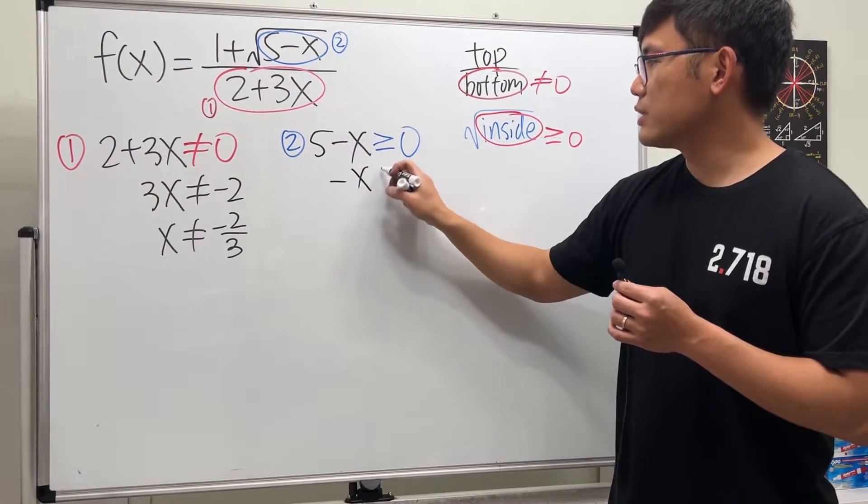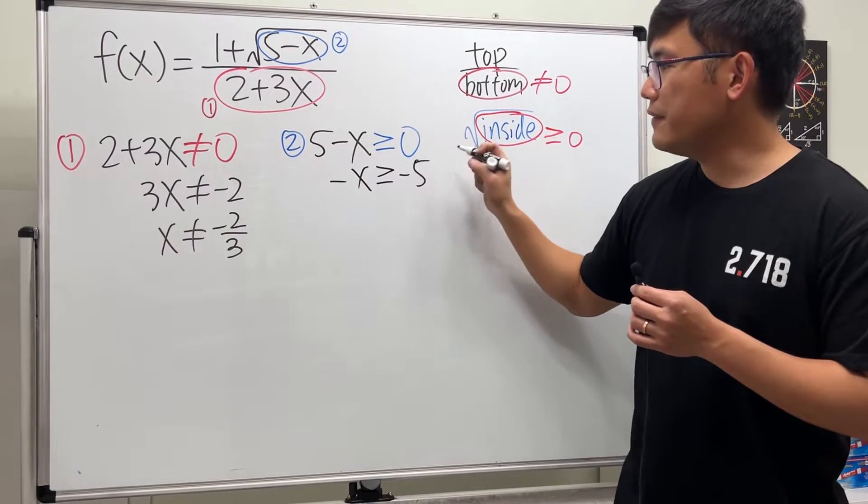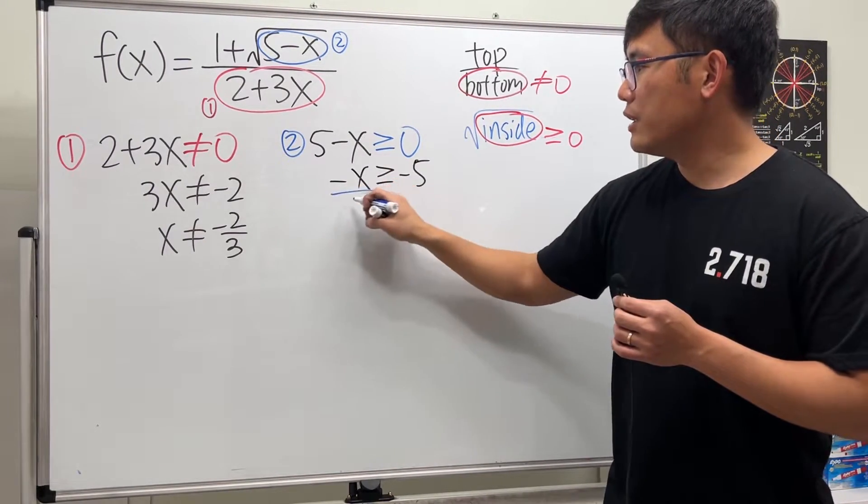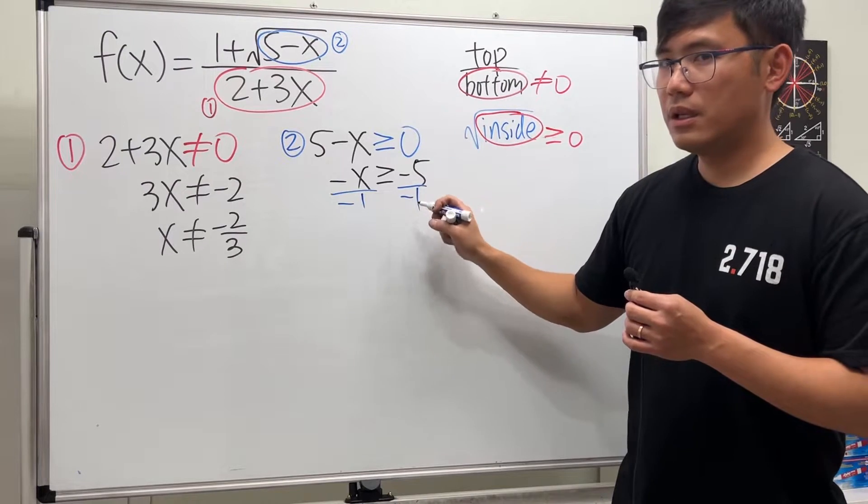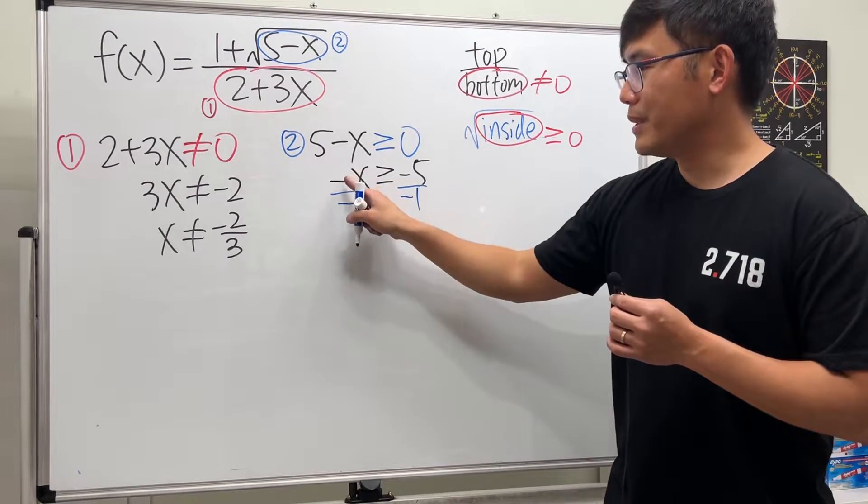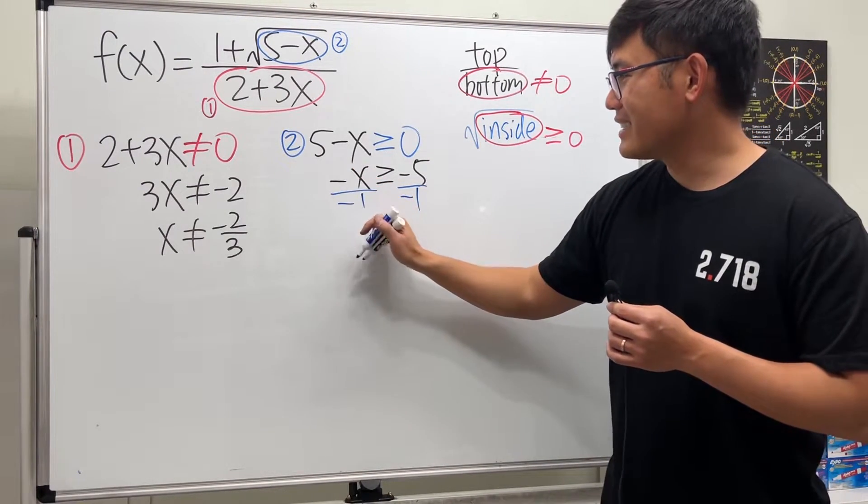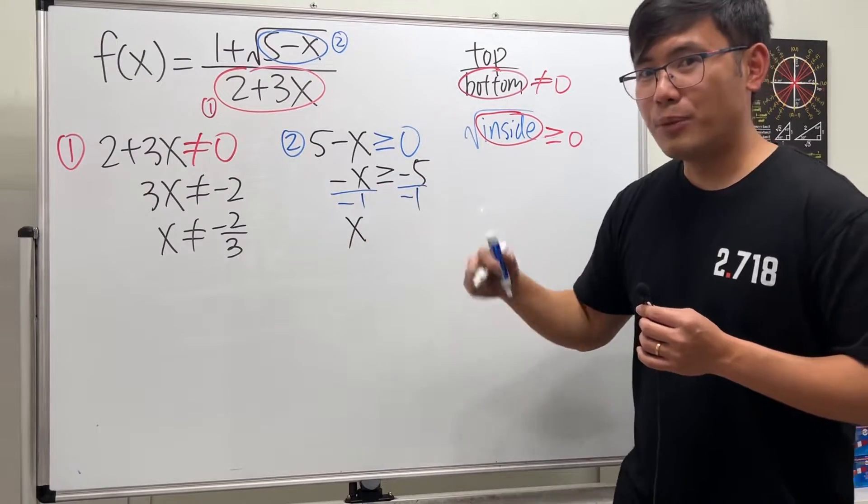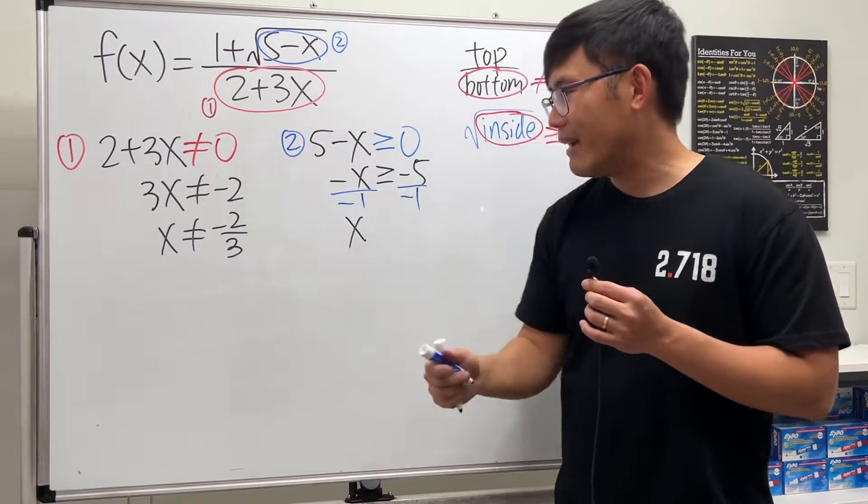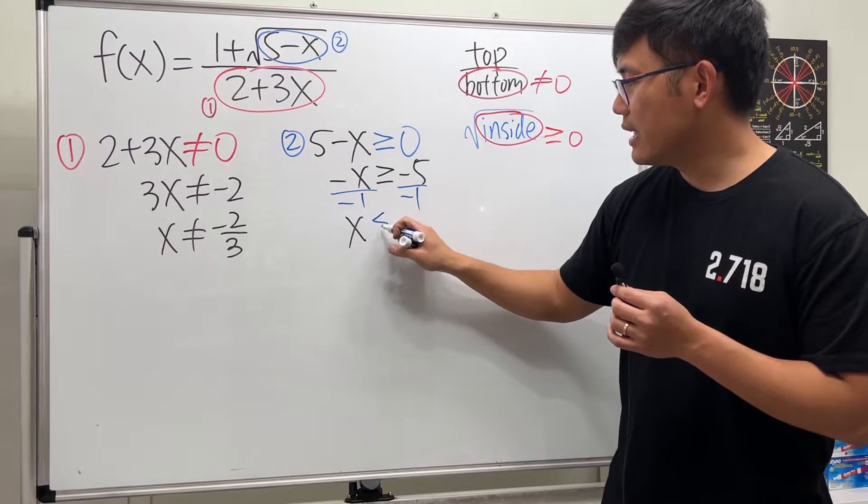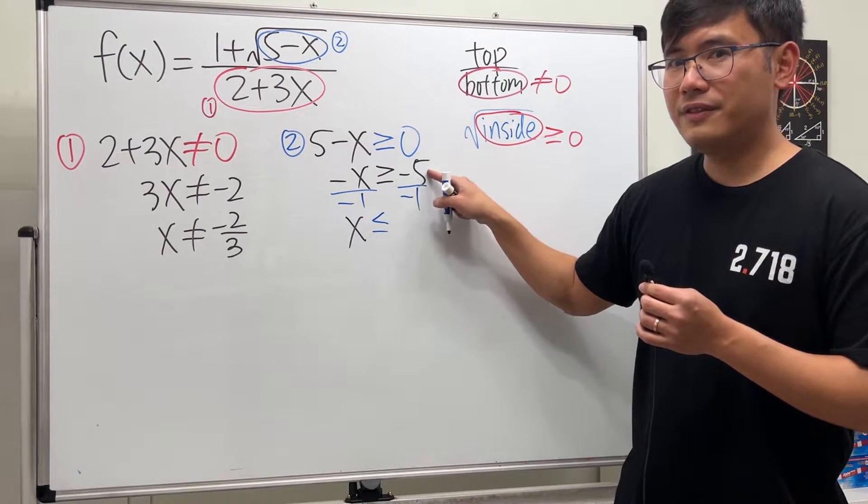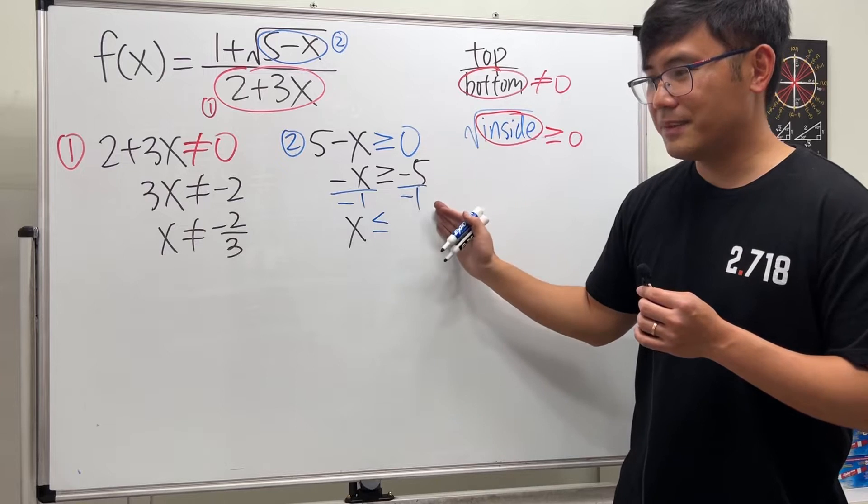Solve this real quick. Put the 5 to the other side, so we get negative x is greater than or equal to negative 5. I'll divide both sides by negative 1. Be careful: we get positive x here, but because we divide both sides by a negative number, we have to flip the inequality. We get x less than or equal to 5.